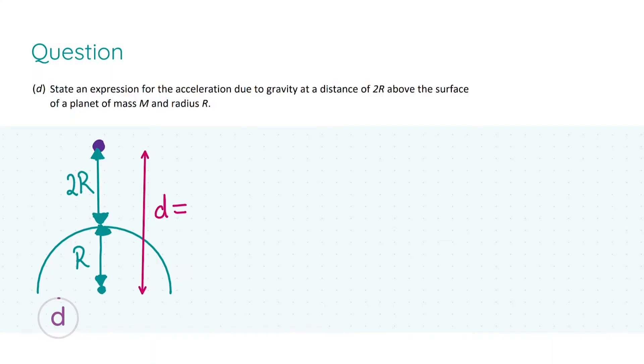In part d we are asked to state an expression for the acceleration due to gravity at a distance of two r above the surface of a planet of mass m and radius r. Make sure to highlight all relevant information that we might use in our formulas.